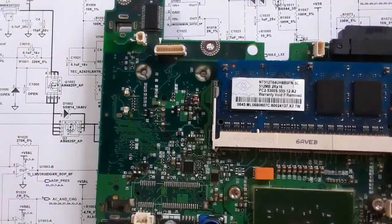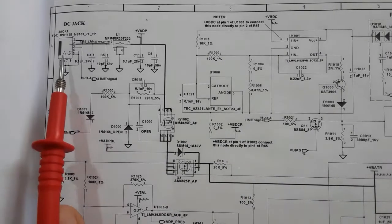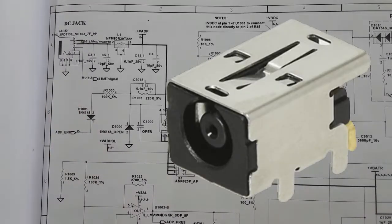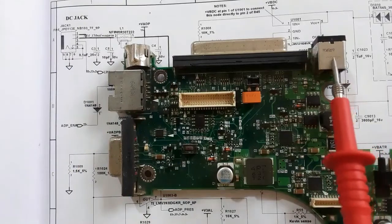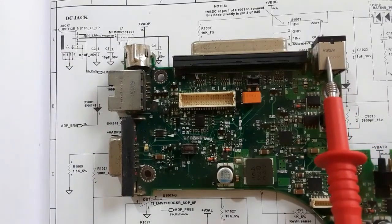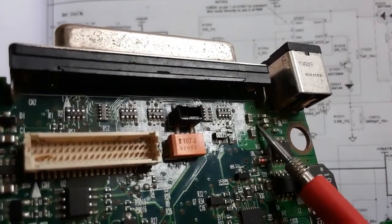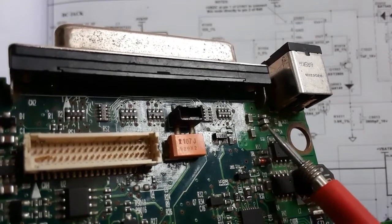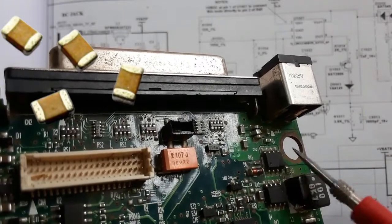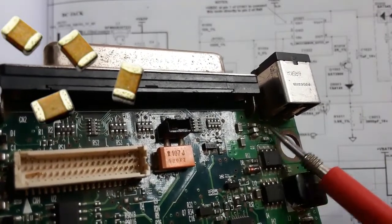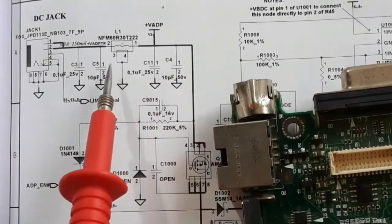This is the motherboard we will work on. We're going to see all these components in the schematic and in the motherboard. We'll begin with the power jack — here is the DC jack or power jack on the motherboard. Then we have the inductor here on the motherboard, near to the power jack. Then we have ceramic capacitors — four ceramic capacitors, the same as in the schematic.